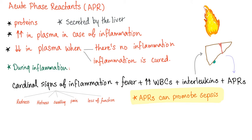Acute phase reactants are proteins — some are peptides, but we'll call them proteins. They are secreted by the liver. They are called acute phase reactants because they increase in plasma during inflammation and decrease when the inflammation is cured or gone.